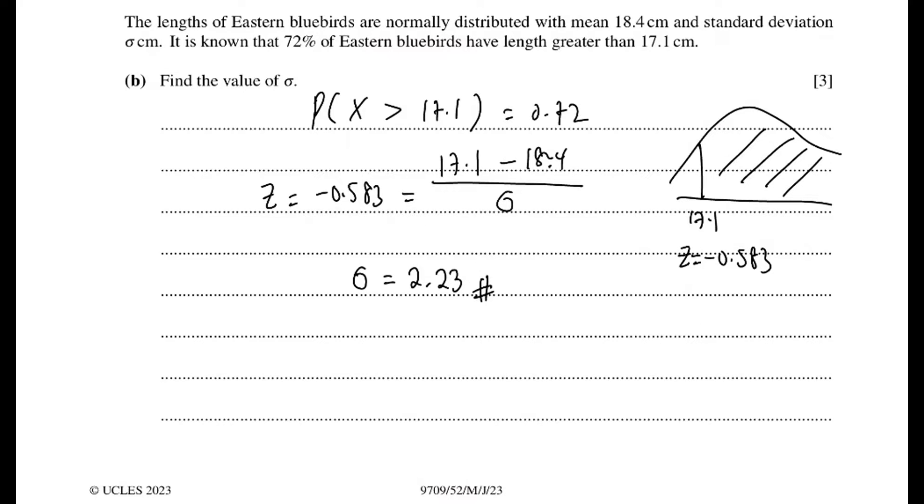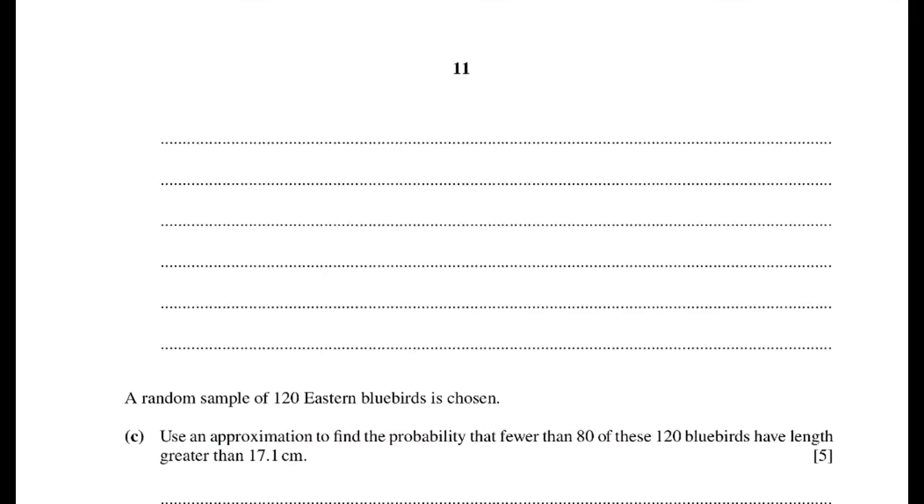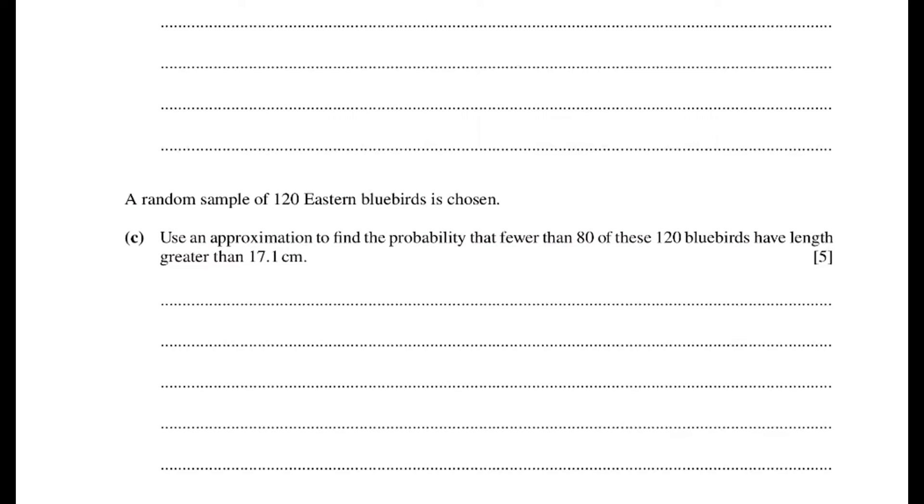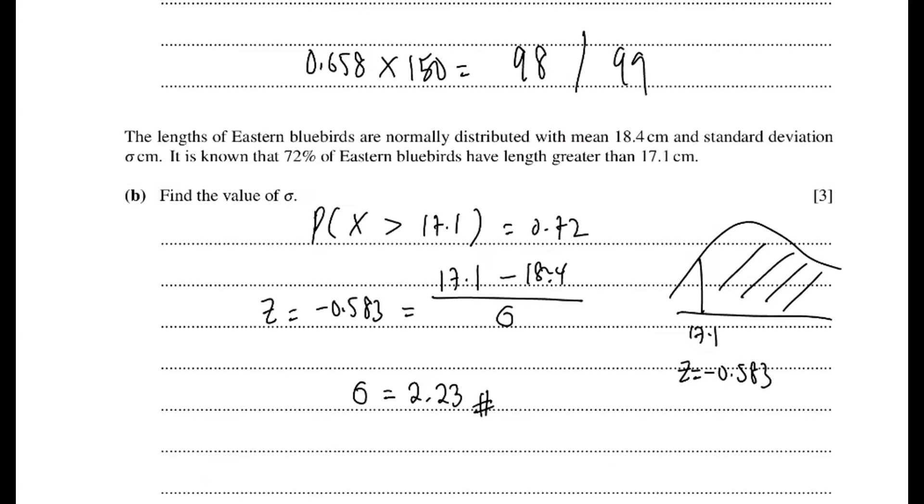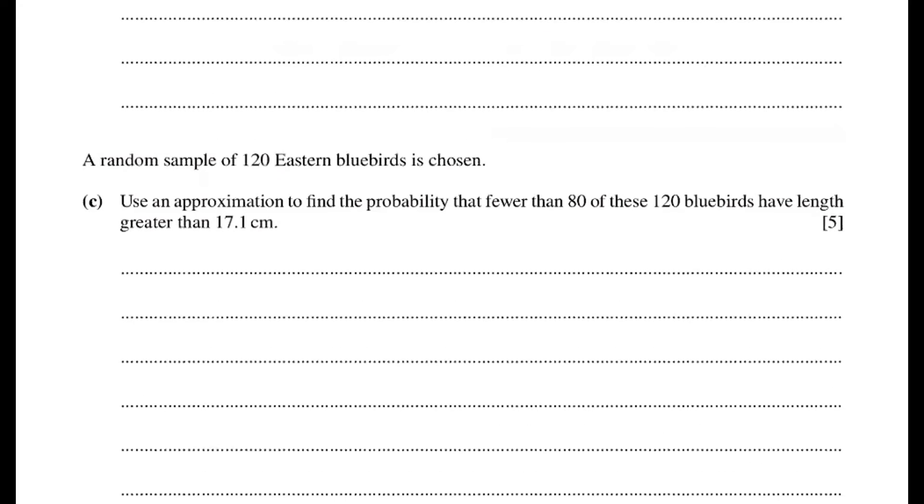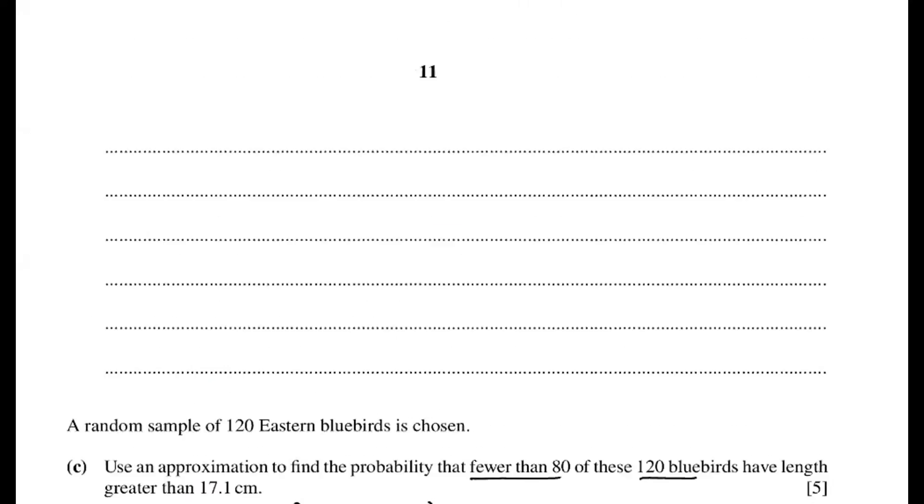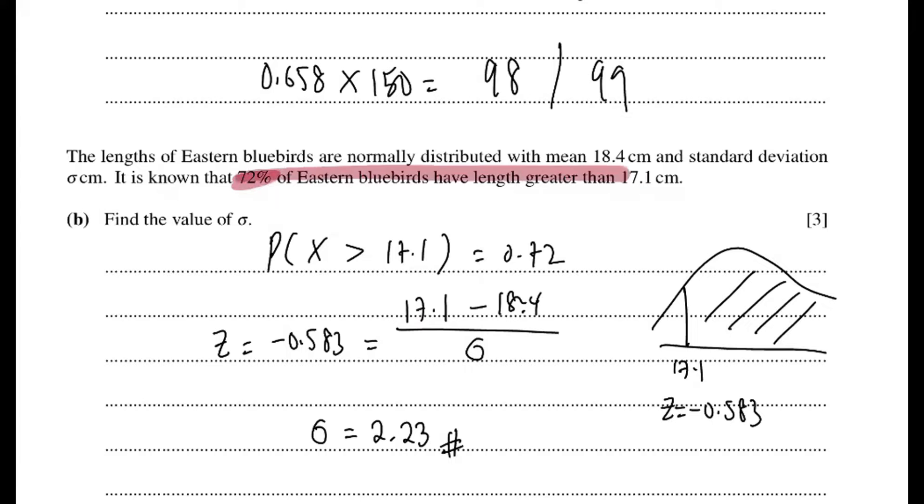So don't forget, every S1 paper they will have one approximation question waiting for you. So 120 bluebirds, and then they say greater than 17.1 cm. So you know greater than 17.1 cm is 72%, right? So therefore, these questions, fewer than 80 bluebirds. So this one is opposite. Obviously it's approximation, means it's binomial become normal distribution. Your binomial is 120 and then 0.72. Because more than 17.1%, it is 72%. Here they give you the probability already. So that's your probability for binomial.